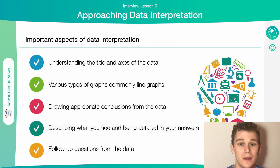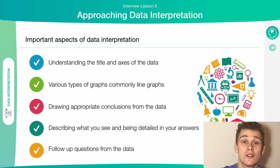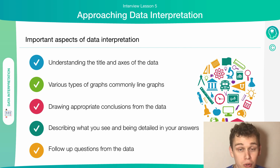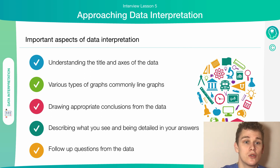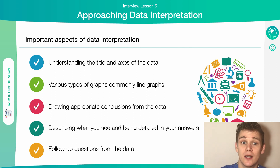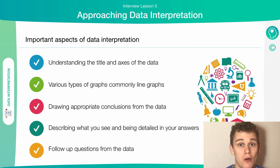Draw appropriate conclusions from the data. This is done by initially ensuring you understand the title and the axis of the graph. If you find you're struggling for something to say, simply describe what you see. You probably know more than you realise. It's similar to those descriptive communication stations — describe what you see in clear and concise language and you can't go too far wrong.